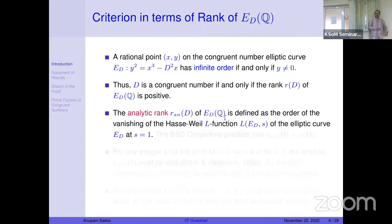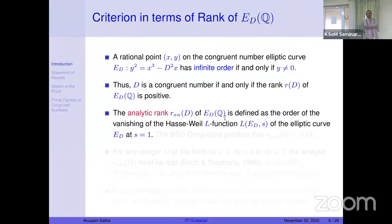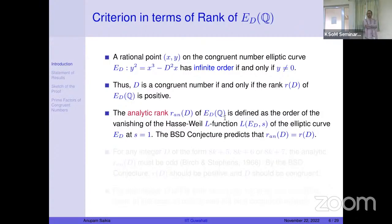The algebraic rank is very hard to compute — there is no known algorithm for it. On the other hand, there is an analytic rank associated with the elliptic curve: the order of vanishing of the L-function at s = 1. The famous BSD conjecture predicts that the analytic rank equals the algebraic rank. It may be noted that when this conjecture was framed, it was not even known whether the L-function was well-defined at s = 1, since that required the modularity theorem.